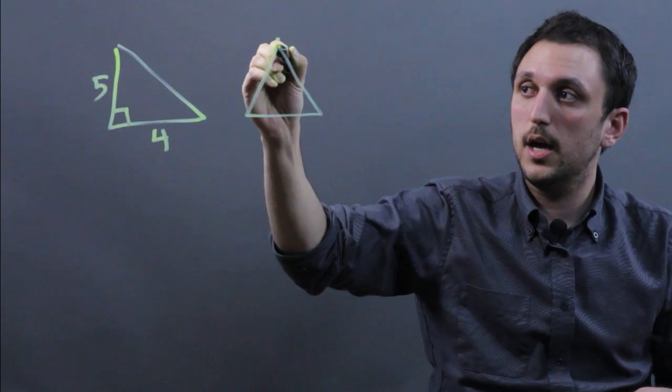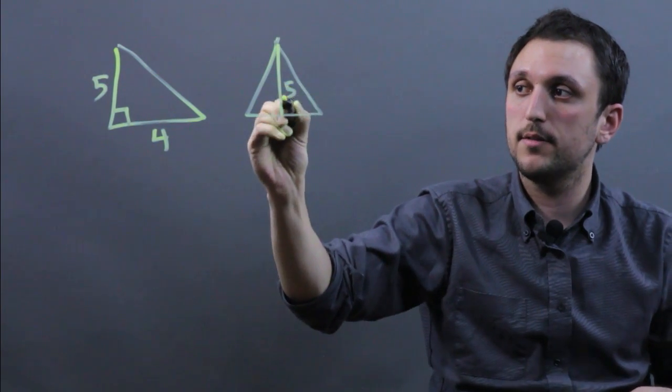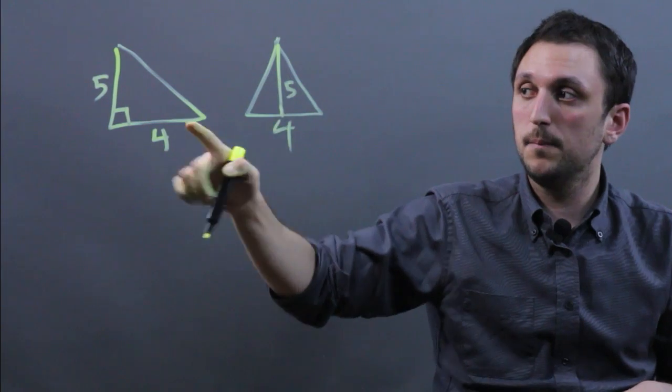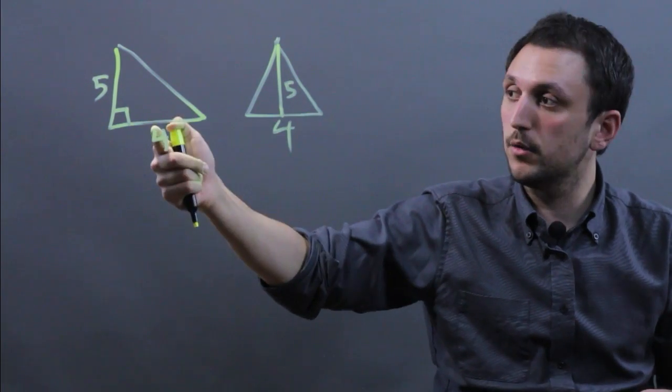Let's call this scalene, and we say here we have a height of 5 and a base of 4. These are most certainly not congruent.